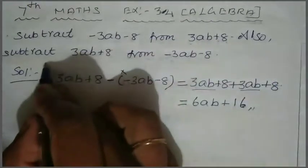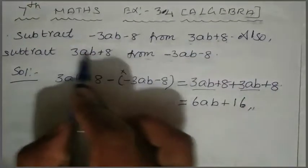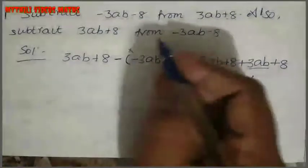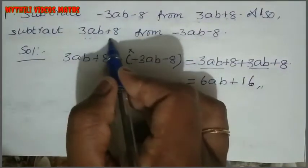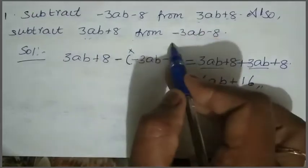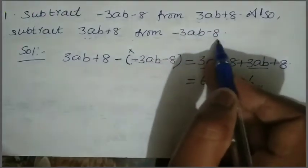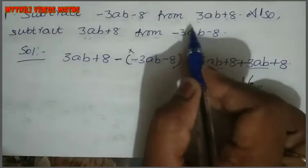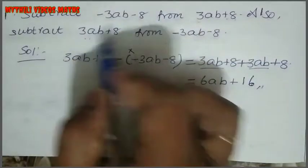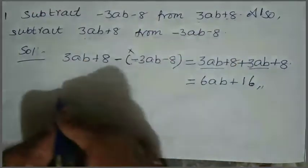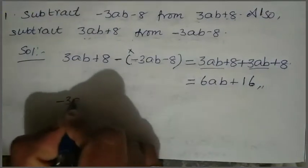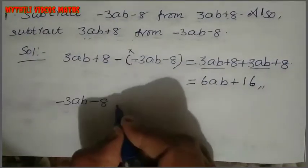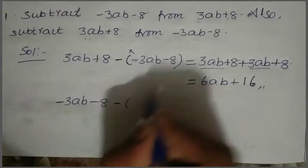Also for the second algebraic expression subtraction: that is how to do it. Same thing — 3AB plus 8, subtract from minus 3AB minus 8. So just write this one first: that is minus 3AB minus 8, subtracting from 3AB plus 8.